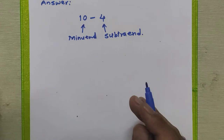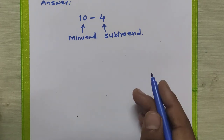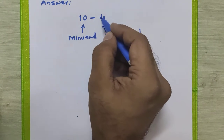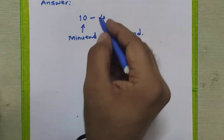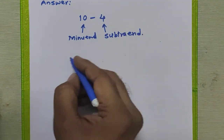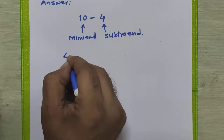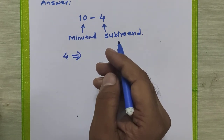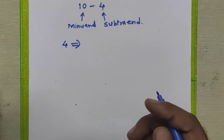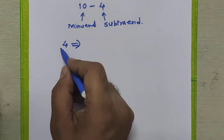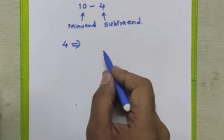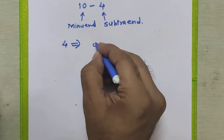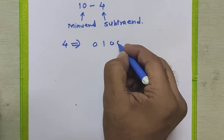First of all, we will find the two's complement of the subtrahend. So we will convert this four in decimal to binary. In four digits, four in binary is 0 1 0 0.